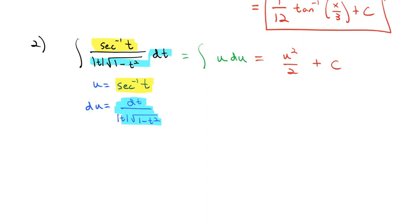And this is a very easy integral to take. We end up with u squared divided by 2 plus our constant, or substituting back that u, the secant inverse of t squared divided by 2 plus our constant.